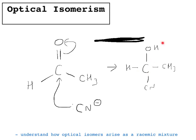You can see that this product carbon now has four different groups around it, so it exists as two different enantiomers — two non-superimposable mirror images of each other. The reason both are formed in a 50-50 ratio is that the nucleophile can attack this planar molecule equally from above or below the plane.